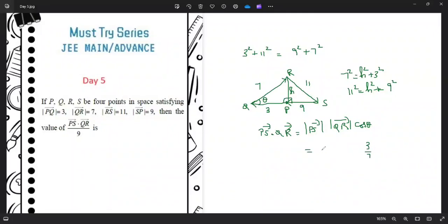PS vector magnitude is given to us as 9. QR vector magnitude is also given to us, which is 7. So after cancellation, we have 9 times 3, which is 27. But the question was to find PS vector dot QR vector divided by k. The final answer happens to be 27 divided by 9.